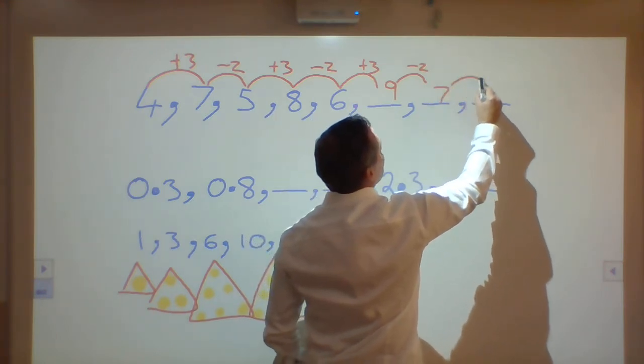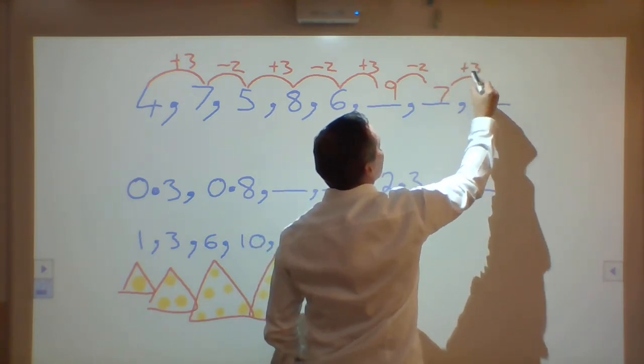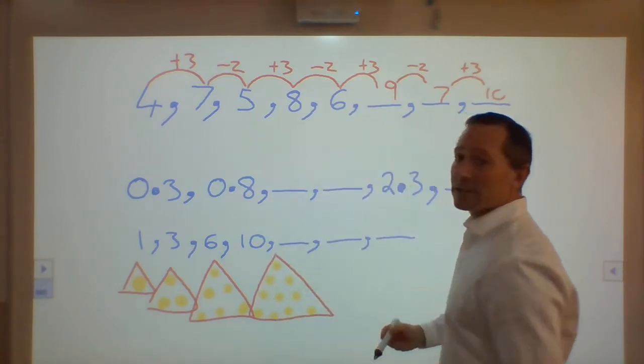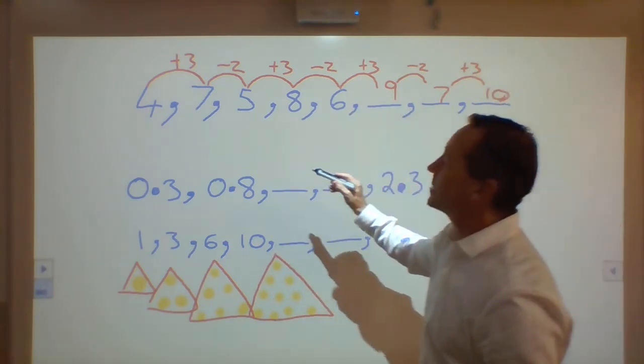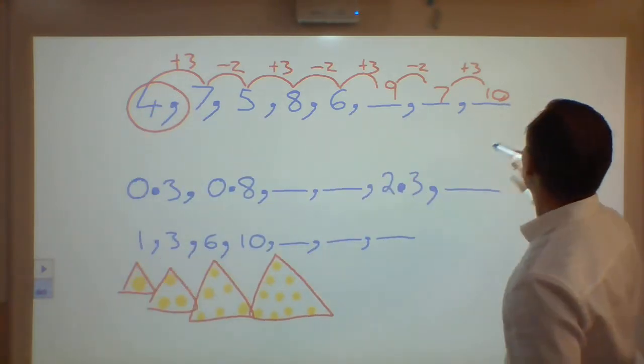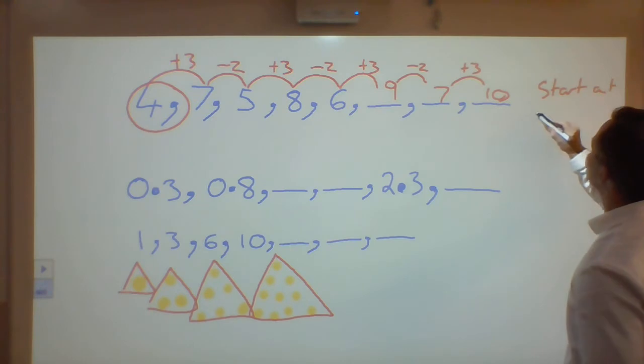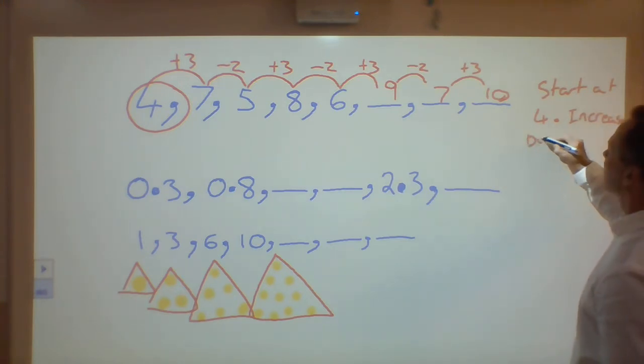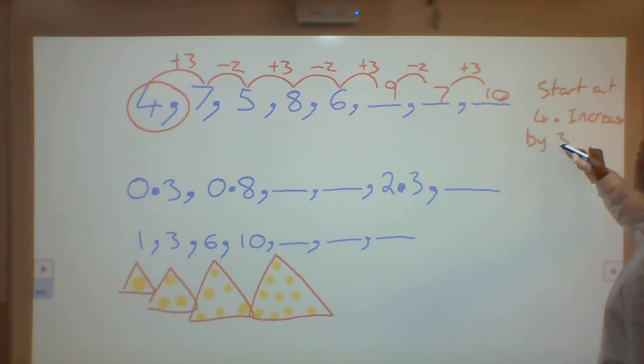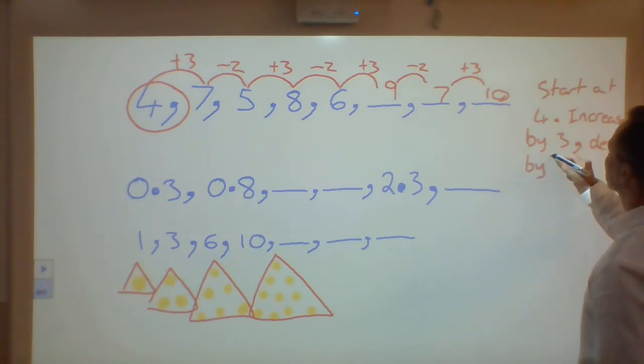7 plus 3 would be 10. In this case, I would then say, starting at 4, start at 4. I would then say, increase by 3, and then decrease, or minus, decrease by 2.